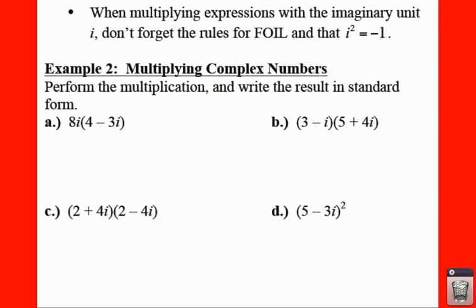So in the first example we just learned how to add and subtract. Here for example two, we're going to be doing some multiplication. So if you remember when you FOIL, the biggest thing you have to remember is that i squared equals negative one. So when you go through here for example two, perform the multiplication and write the result in standard form. Standard form is a plus bi.